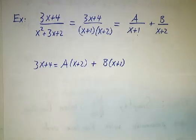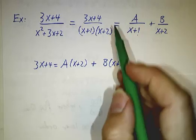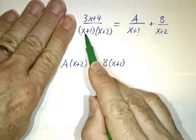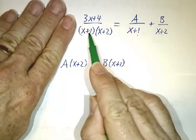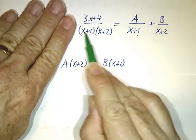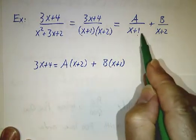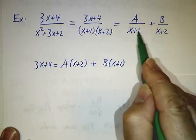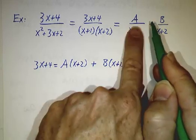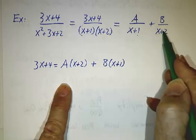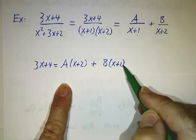And the way we do that is we cross multiply. We take this expression, and we multiply everything through by x plus 1 times x plus 2. When you multiply the left-hand side by x plus 1 times x plus 2, you get 3x plus 4. When you multiply this by x plus 1 times x plus 2, the x plus 1 cancels, and you wind up with A times x plus 2. This times x plus 1 times x plus 2 gives you B times x plus 1.